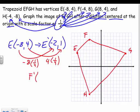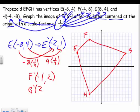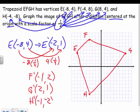So F prime would be—well, a fourth of negative 4 is negative 1. A fourth of 8 is 2. G prime: a fourth of 8 is 2, a fourth of 4 is 1. And H prime would be a fourth of negative 4 is negative 1, and a fourth of negative 8 is negative 2. And I just graph all my new points. I'm going to do this in green now.